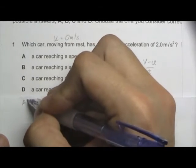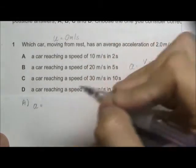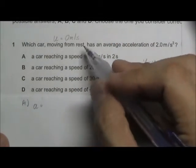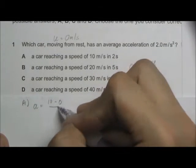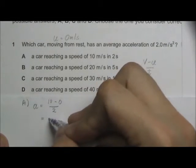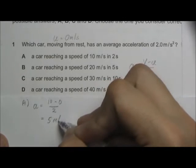In option A, the acceleration is equal to final speed 10 minus zero over 2 seconds. This will give us 5 meters per second squared.